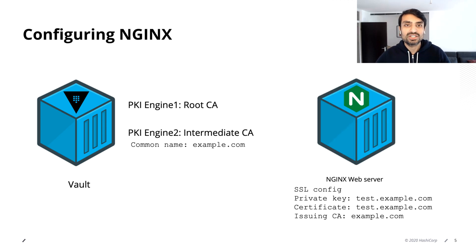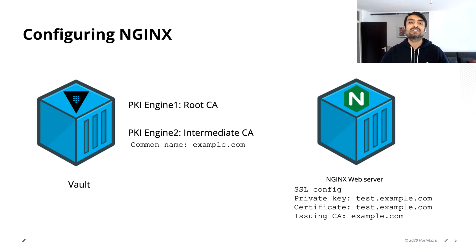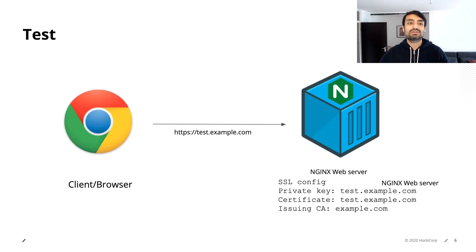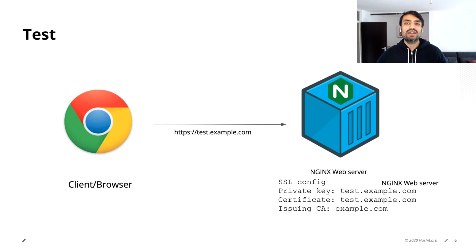I'm going to configure the Nginx server, set up the private key, and also provide the issuing CA and the certificate that we get from the intermediate CA. Once done, we can test it out by connecting to the Nginx server using a browser. We're also going to look at some features like audit logging, and also how you can revoke the certificates, list the certificates, and things like that.